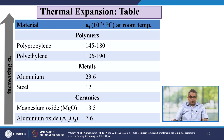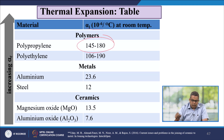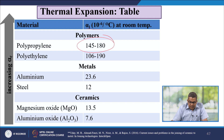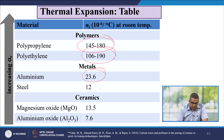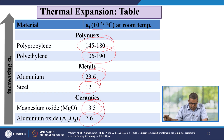Comparing thermal expansion coefficients (α): polypropylene 145–180 × 10⁻⁶ °C⁻¹, polyethylene 106–190 × 10⁻⁶ °C⁻¹, aluminium 23.6 × 10⁻⁶, steel 12 × 10⁻⁶, magnesium oxide 13.5 × 10⁻⁶, and aluminium oxide 7.6 × 10⁻⁶ °C⁻¹. Polymers possess a higher degree of thermal expansion than metals and ceramics because of their weak secondary bonds.